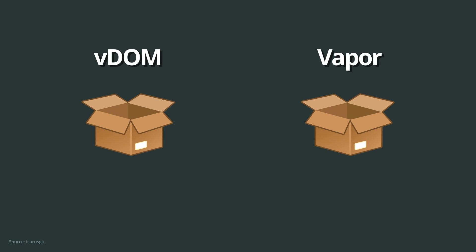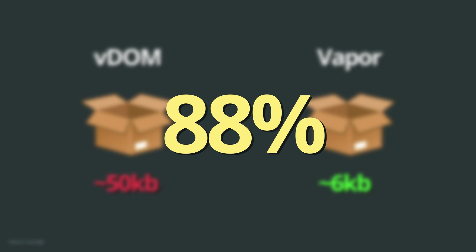The size difference between VDOM and no VDOM is actually massive. The baseline size of VDOM is usually around 50 kilobytes. And without VDOM, your app baseline size could go down to 6 kilobytes — that is 88% less. Now, the main question is how do we actually use this in our apps?